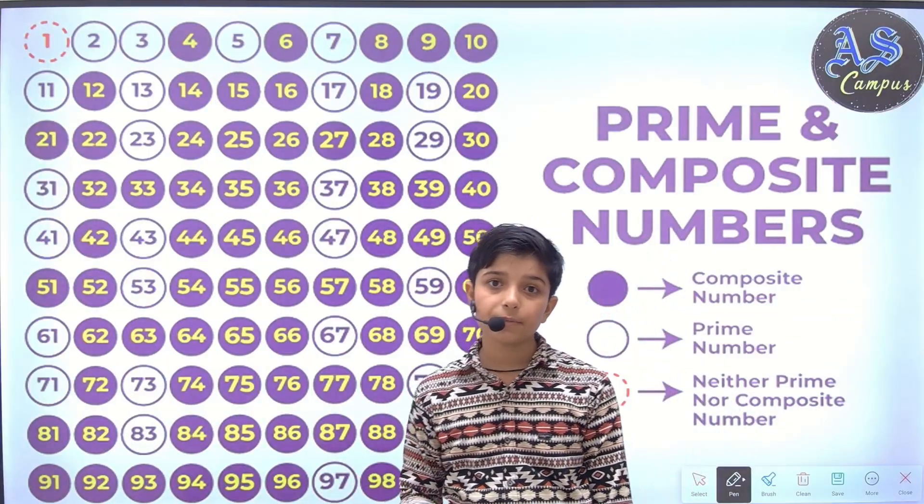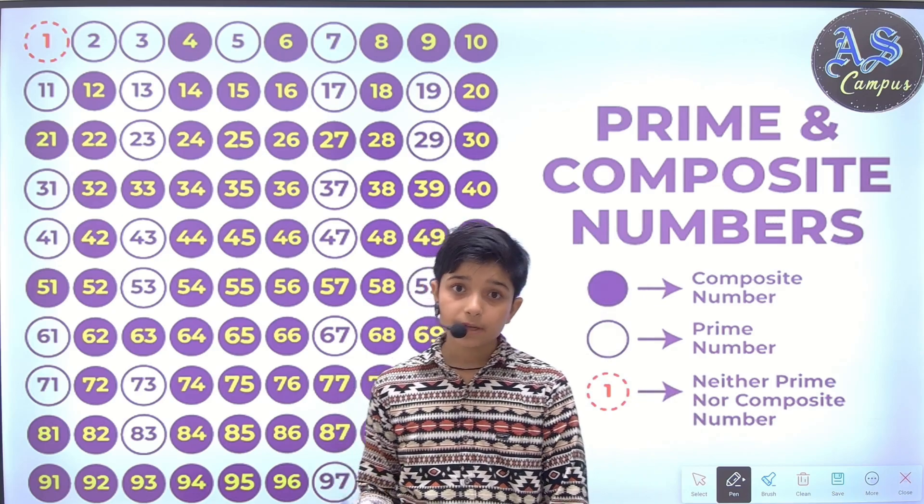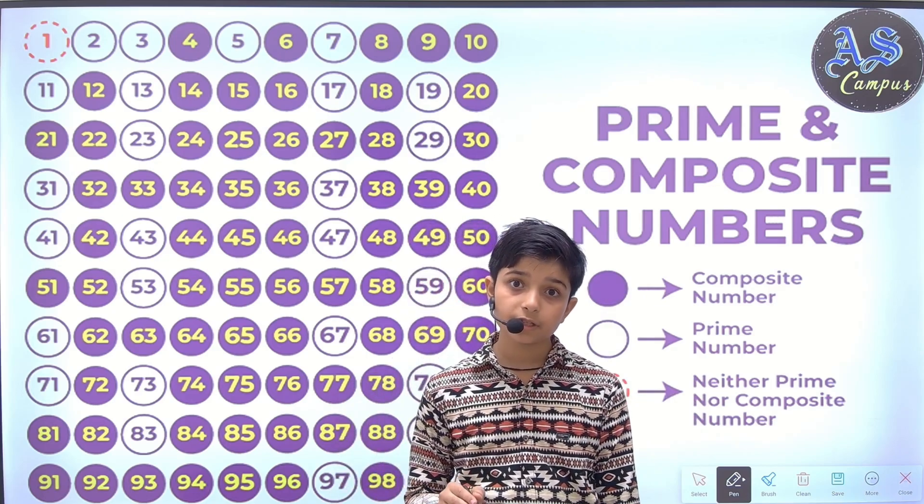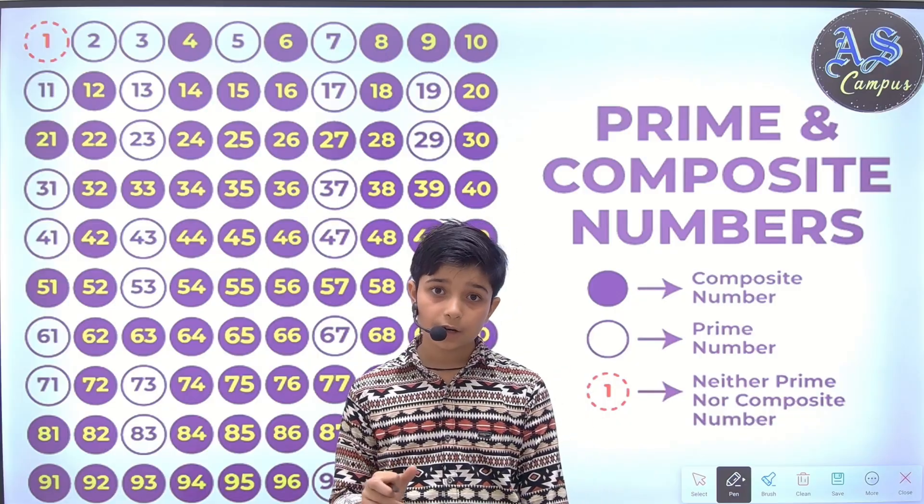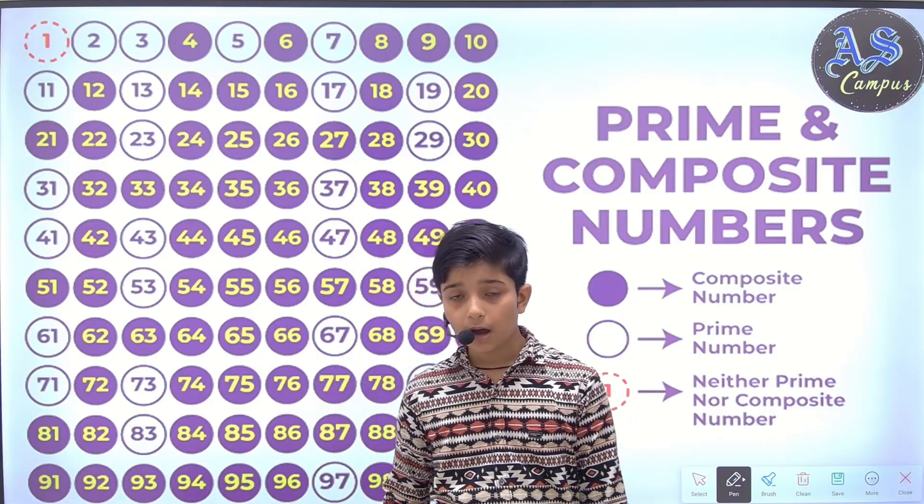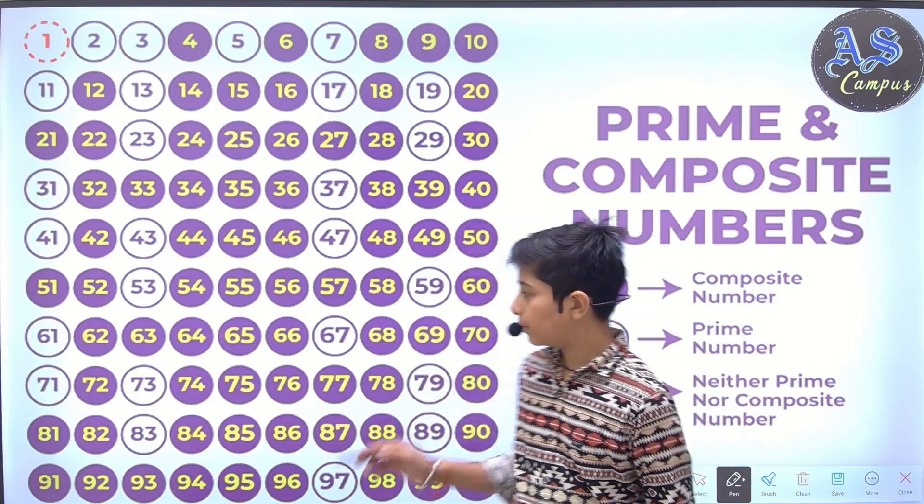In this slide there are numbers from 1 to 100. Many numbers are in purple circles and many numbers are in white circles. The numbers which are in purple circles are composite numbers. The numbers which are in white circles are prime numbers, and 1 is neither prime nor composite number.